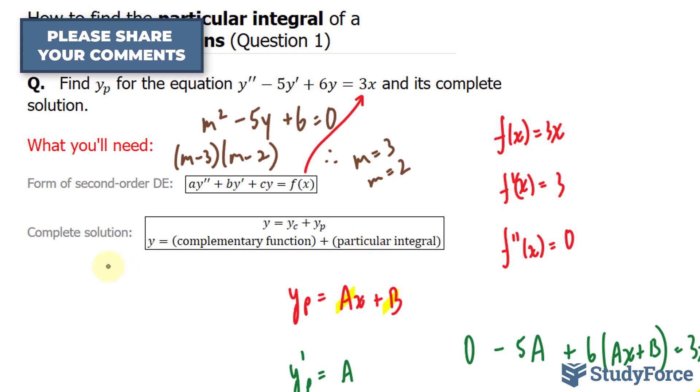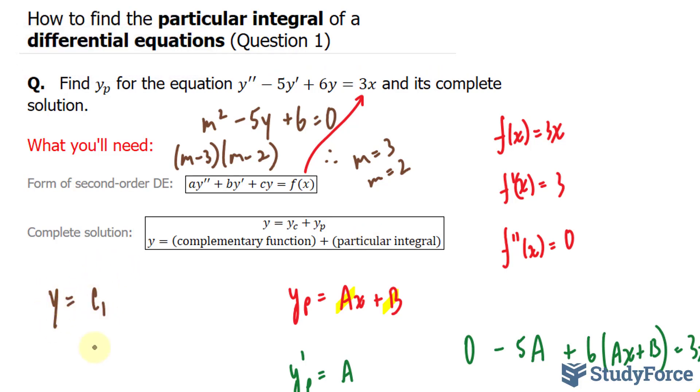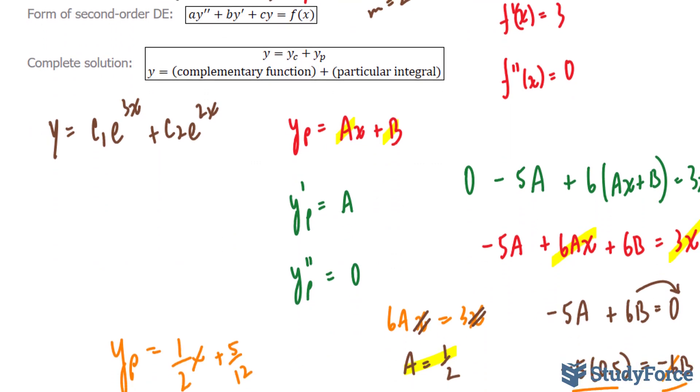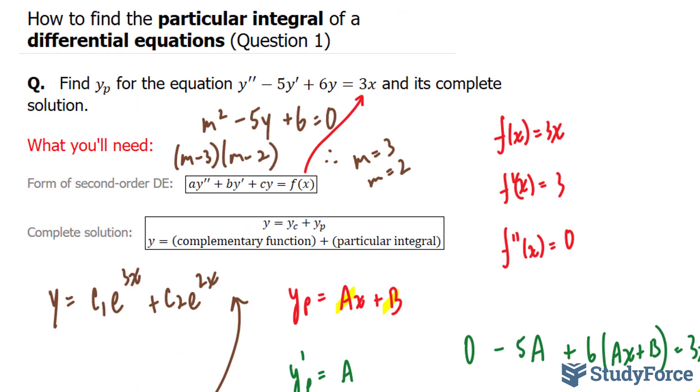The complementary function is written like this. We have y equals c subscript 1 times e to the power of our first m, which is 3x, plus c subscript 2 times e to the power of our second m, which is 2x, followed by our particular integral, which is written right next to it. And there you have it. That is how to find the particular integral of a differential equation.